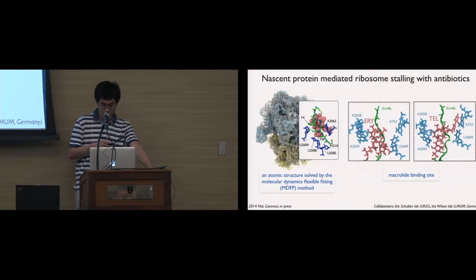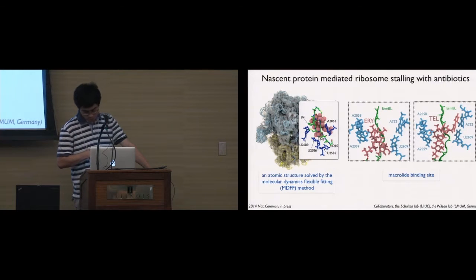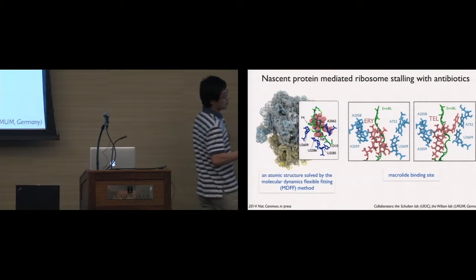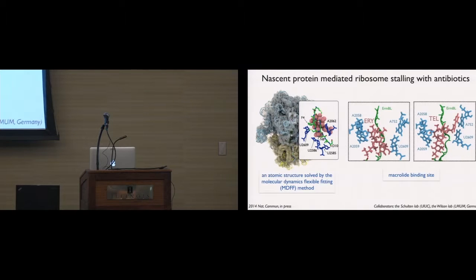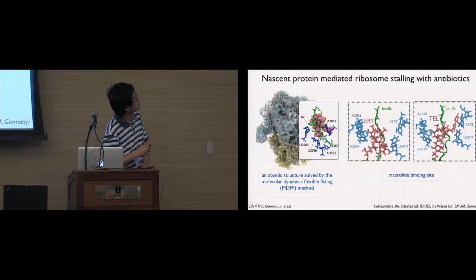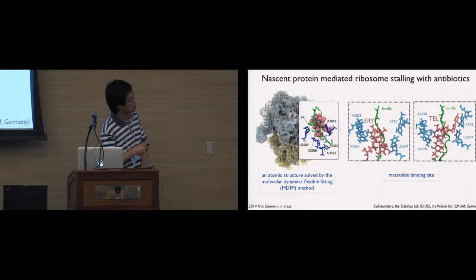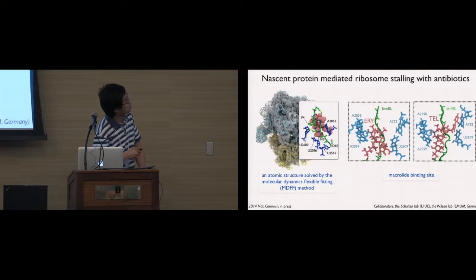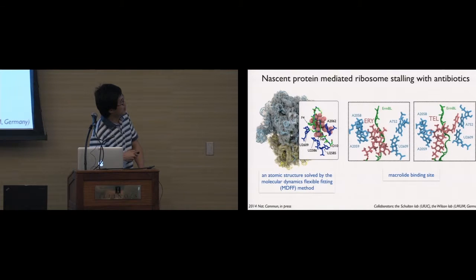For this purpose, one of our collaborators, the Wilson lab, determined the cryo-electron microscopy structure — basically a density map of the complex — of the E. coli ribosome complexed with erythromycin and the drug in the tunnel, as well as a nascent polypeptide shown in green.